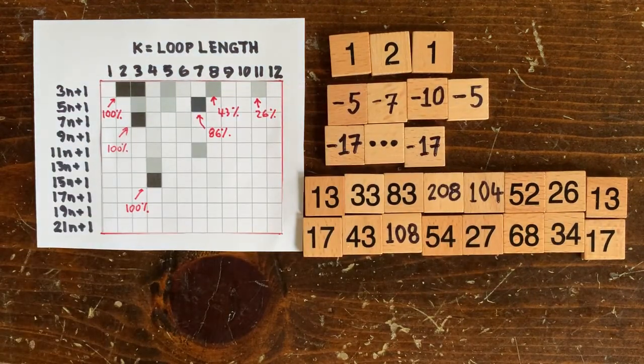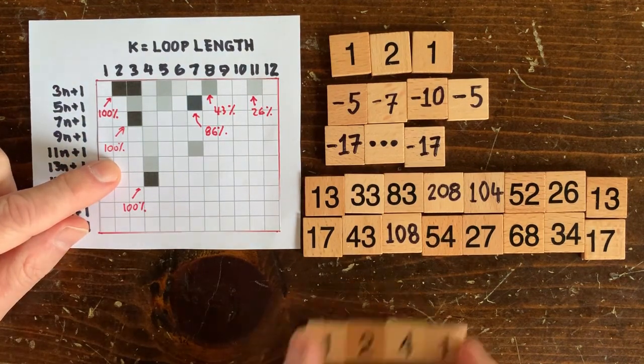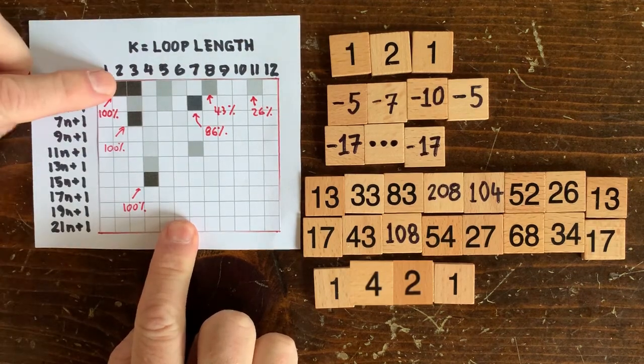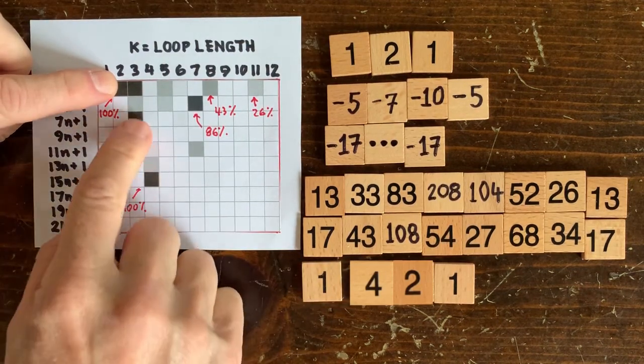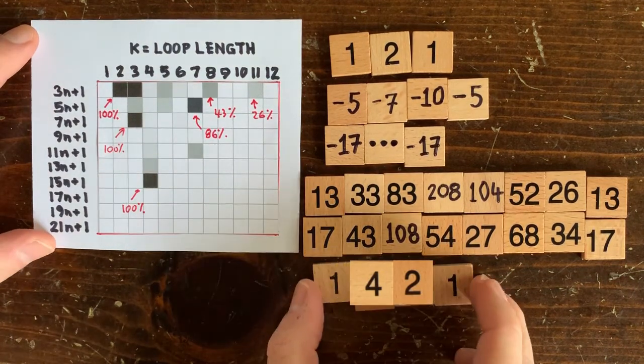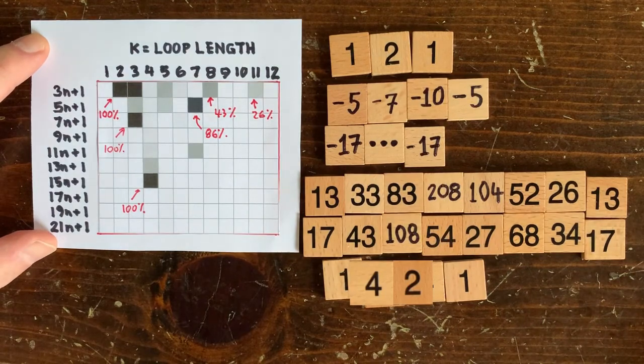Okay, how about the 7n plus 1 problem? We haven't gone there yet. It turns out there's a loop of length 3, but it's only the boring 1, 4, 2, 1 loop. And the rest of the chart has some small chances here and there, but none of them pan out, except for the 15n plus 1 problem, where we find another boring loop that includes 1.